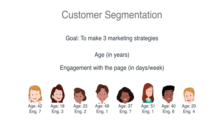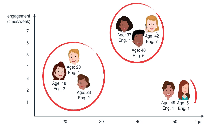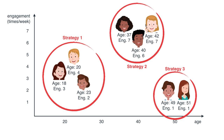One of the first things to do with data is to plot it. In the horizontal axis we put age, and in the vertical axis we put engagement. Now it looks more clear — there are three groups. The first strategy is for people around age 20 with low engagement: two, three, and four days a week. Strategy two is for people in their late thirties and early forties with high engagement. The last one is for people in their fifties with very low engagement.